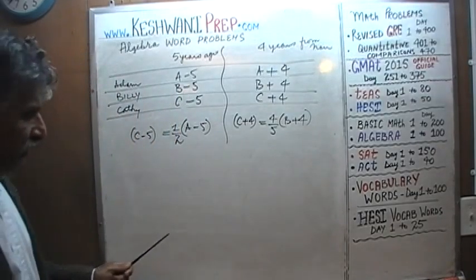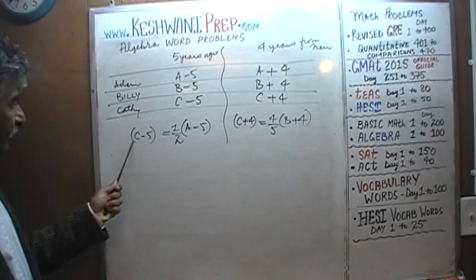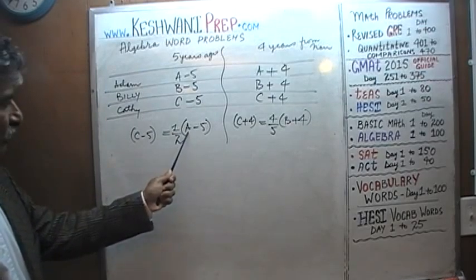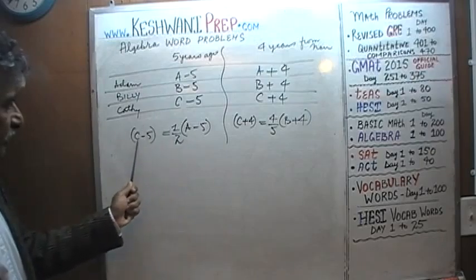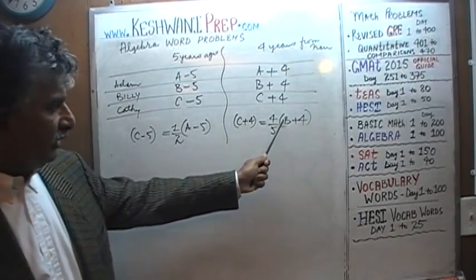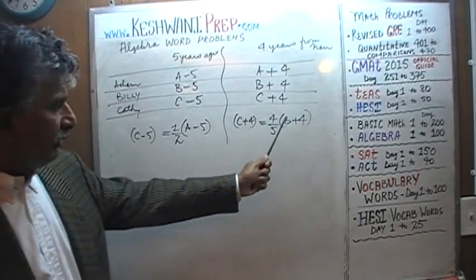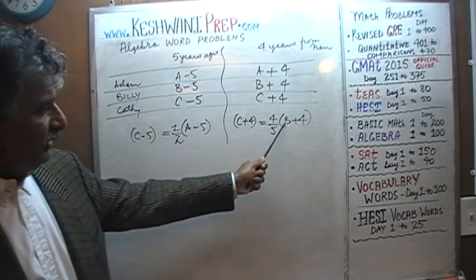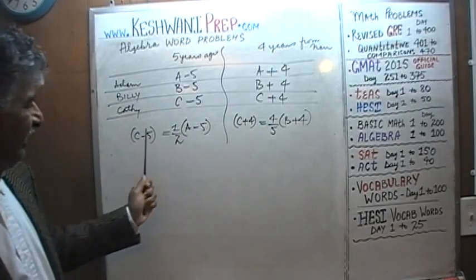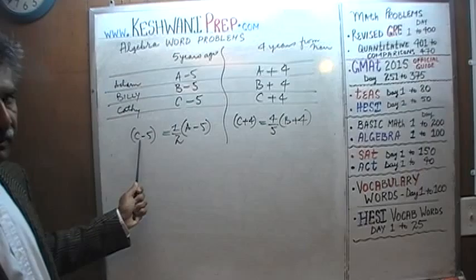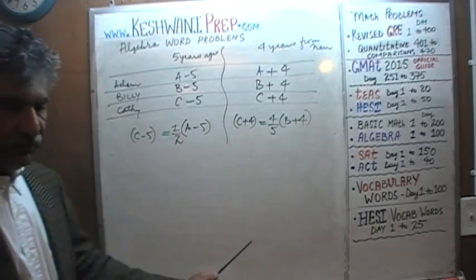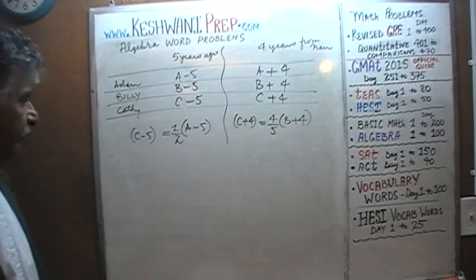Don't forget equation one: the sum of their ages is 30. Our strategy is to solve equation two for A in terms of C, solve equation three for B in terms of C, then substitute both into equation one — A plus B plus C equals 30 — and solve for C.